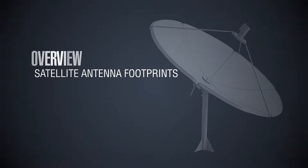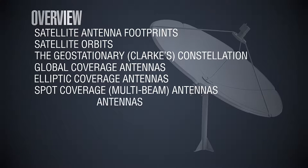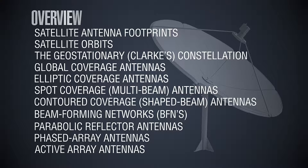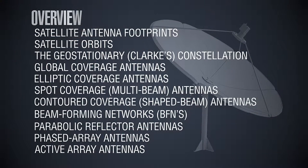The outline of this lesson covers: satellite antenna footprints; satellite orbits, because the footprints depend on the satellite orbits — in particular the geostationary orbit is one important orbit for many applications; different types of antennas depending on the coverage desired — global coverage antennas, elliptic coverage antennas, spot or multi-beam antennas, and contour coverage or shaped beam antennas; and beamforming networks needed for contouring-type antennas.